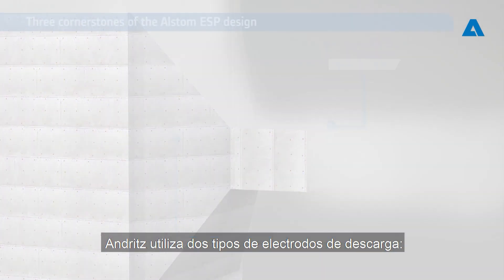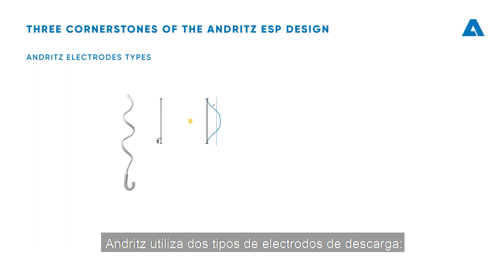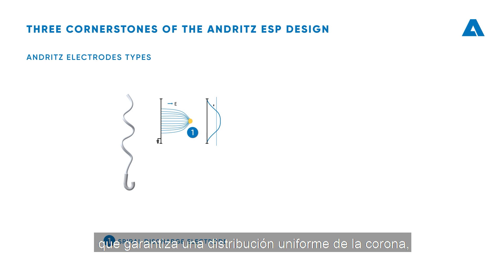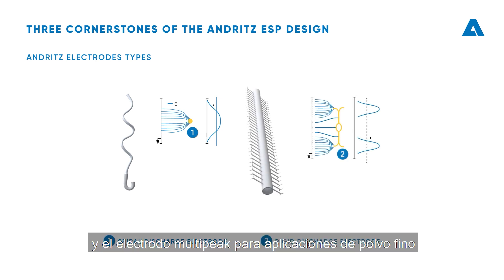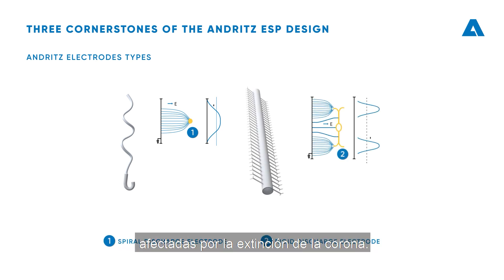ANRITS employs two types of discharge electrodes: the cost-effective spiral discharge electrode, which ensures uniform corona distribution — especially important for high-resistivity applications — and the multi-peak electrode for fine dust applications affected by corona quenching.